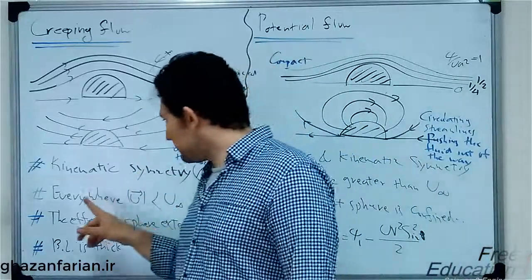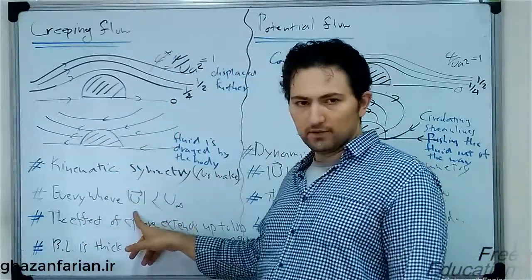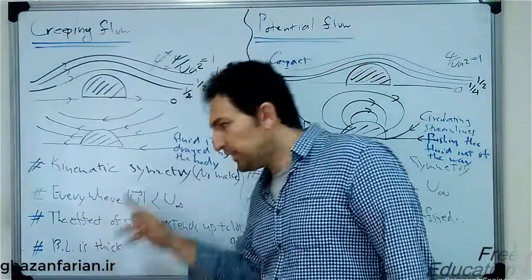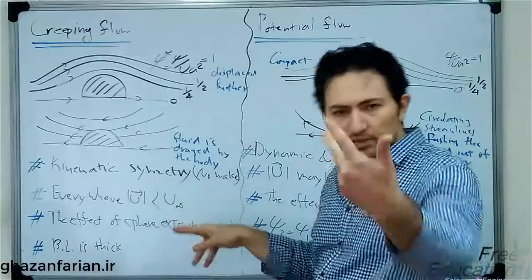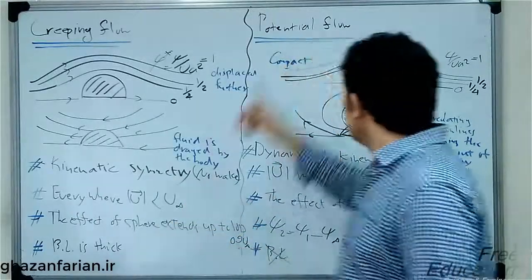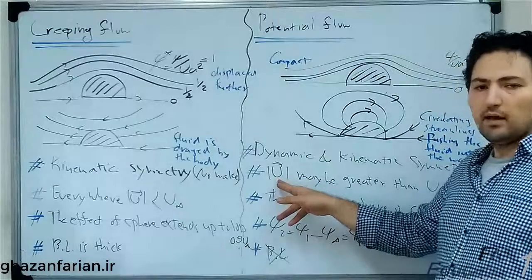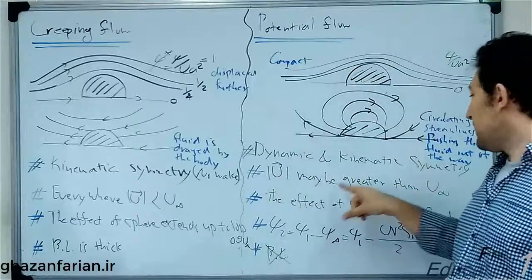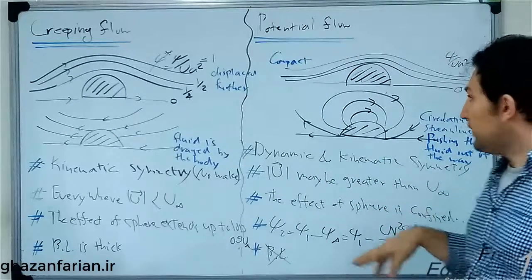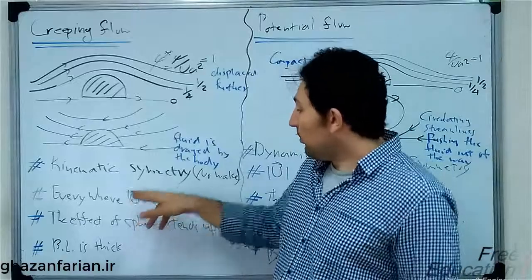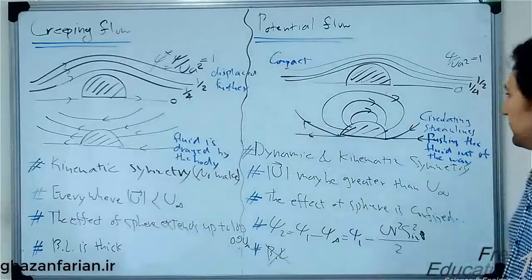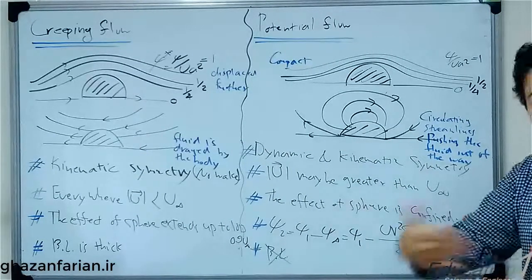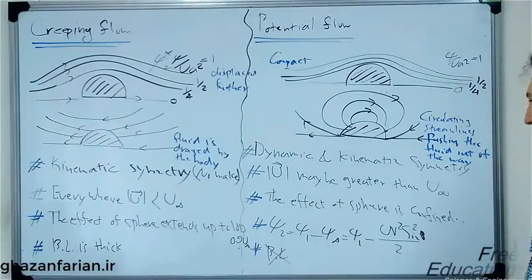Also, the other difference between these figures is about the magnitude of the velocity. In creeping flows, the magnitude of velocity everywhere is smaller than the velocity of the upstream incoming flow. But in potential flow, the velocity of the fluid in different points may be greater than the velocity of the incoming velocity. So here, the fluid always is retarded. But in this case, in some places, the fluid can be accelerated and the velocity can exceed the velocity of the incoming fluid.